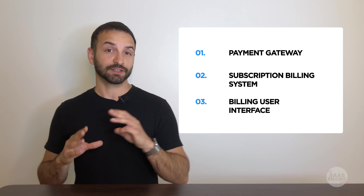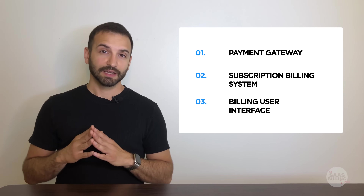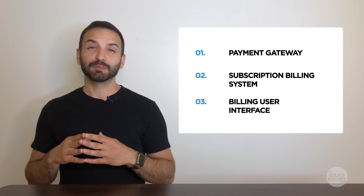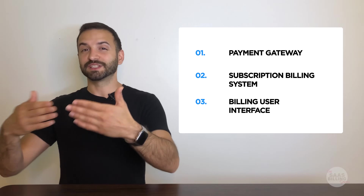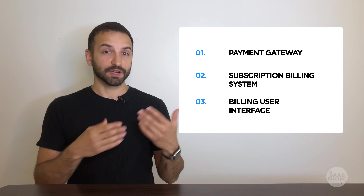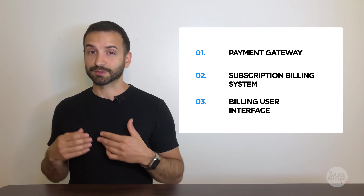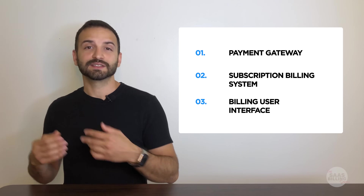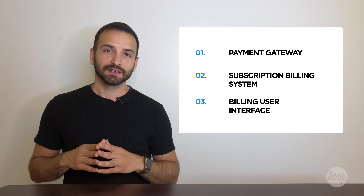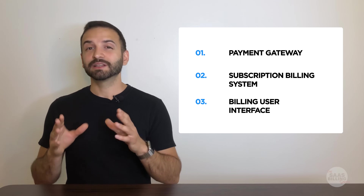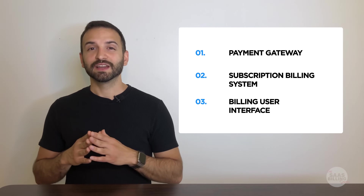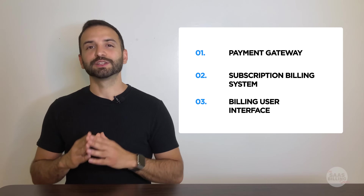The third component is the Billing User Interface. It is your customer-facing billing front-end — the part that your customers interact with the most — allowing customers to view pricing, subscribe to plans, update their credit card, and download invoices. Any billing page that your end-user views within your product is part of your billing UI.